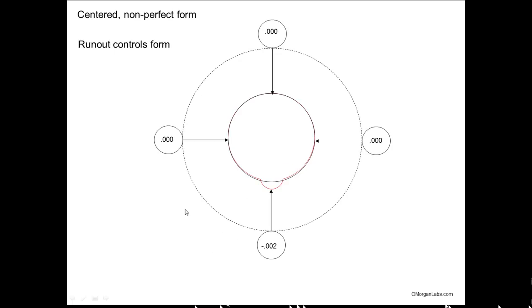Same thing but reversed: you have a protrusion, but everything else is perfect. So it goes in 2 mils — because it kind of gets shorter — so it's a minus. This would satisfy a runout of 2. This is how runout controls form as well as the location of a circle.